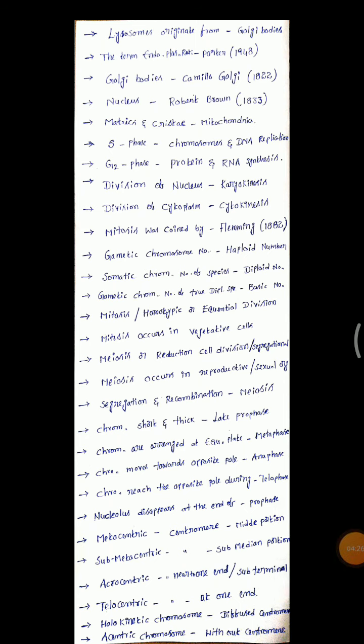Division of nucleus is called karyokinesis. Division of cytoplasm is called cytokinesis. Mitosis was coined by Flemming in 1882. Gametic chromosome number is the haploid number. Somatic chromosome number is the diploid number. Gametic chromosome number in a diploid species is the basic number. Mitosis produces homotypic cells.